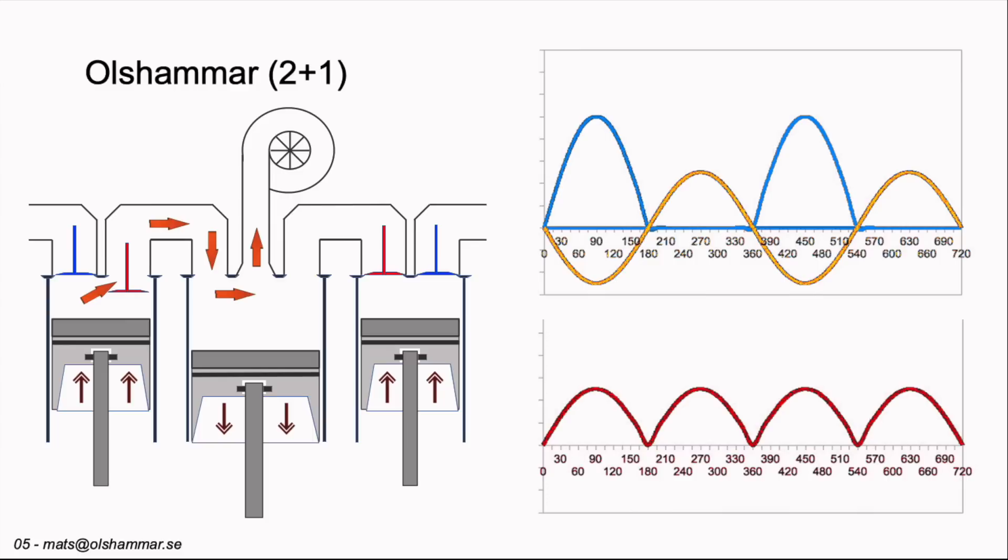So the blue curves show two exhaust pulses from the left and right combustion cylinder. The yellow curve shows the exhaust piston moving up and down and taking care of some of the gases. And the red curve shows the four pulses going to the turbo. So we have more pulses but they are smaller and more evenly.